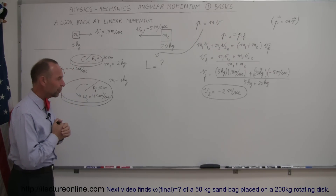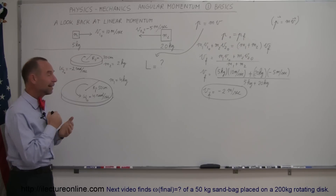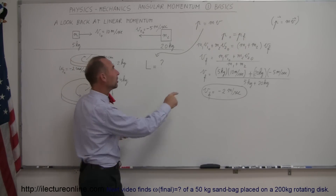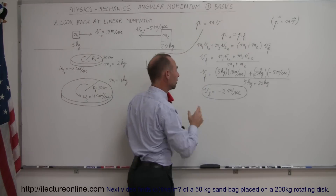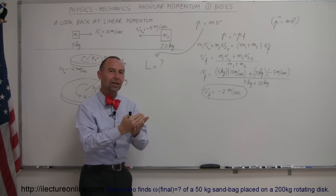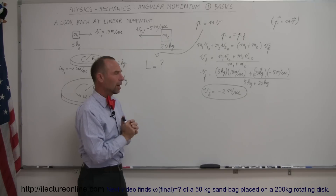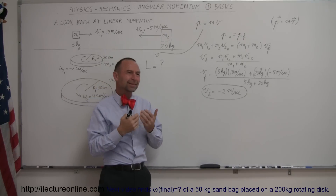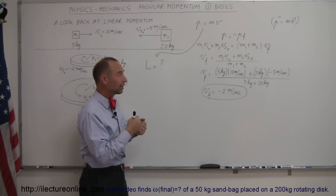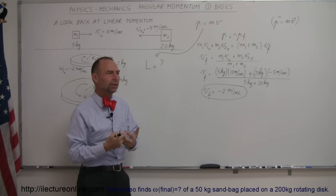Before we talk about angular momentum, I want to do a quick look back at what linear momentum is. The definition of linear momentum — we use p for linear momentum — is that it's the product of mass times the velocity of an object moving in linear motion. That's not quite like kinetic energy, because kinetic energy of an object moving in linear motion is one half mv squared.